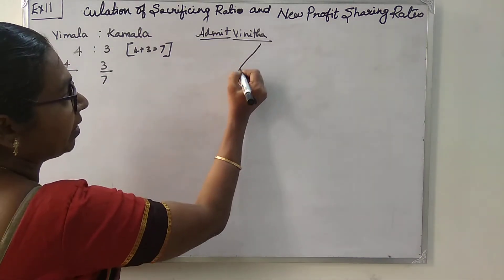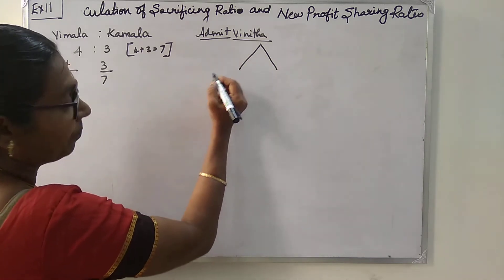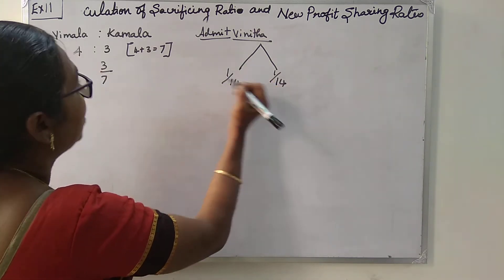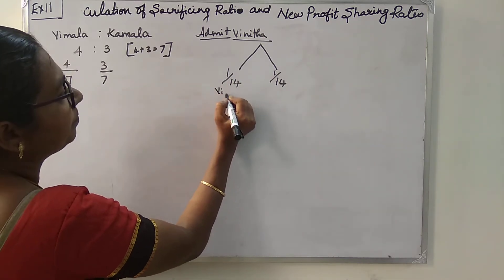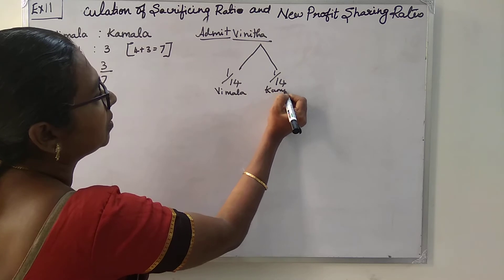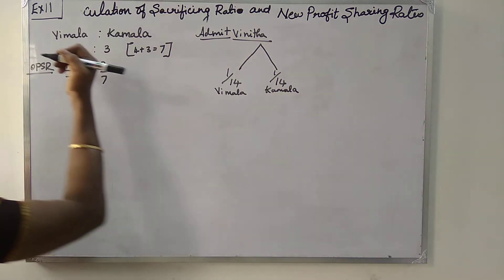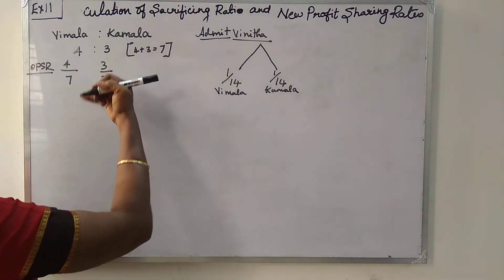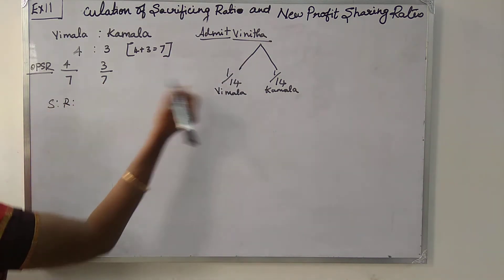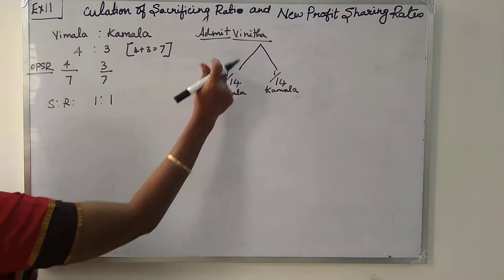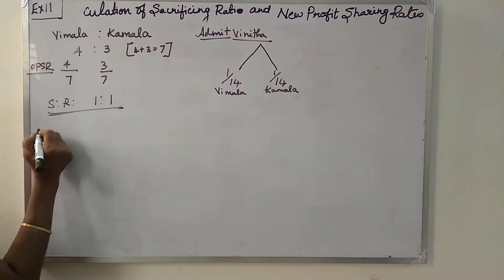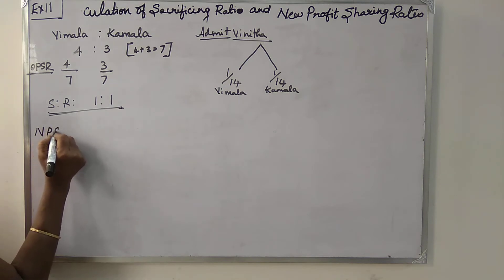Vinita acquires 1/14th from Vimala and 1/14th from Kamala. That is to say, Vimala and Kamala are each sacrificing 1/14th of their share. So the sacrificing ratio is very easy: 1 is to 1. The sacrificing ratio is 1:1.